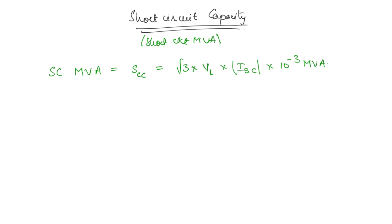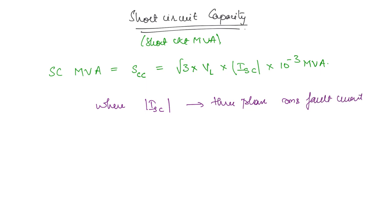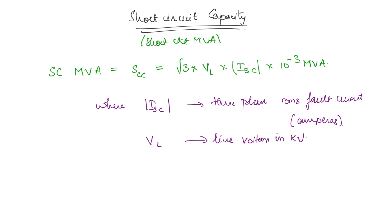Why is 10 to the power minus 3 present? This depends on the units of the parameters. ISC is the three-phase RMS fault current in amperes, and VL is the line voltage in kilovolts. So we get the result in MVA — mega volt amperes — which is why we multiply by 10 to the power minus 3.